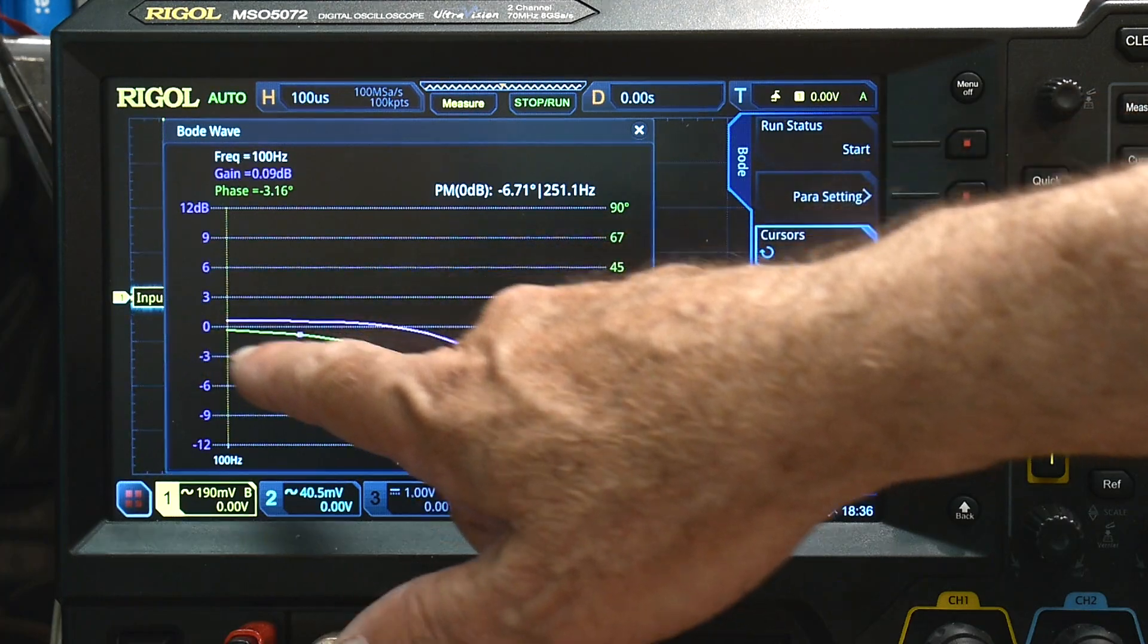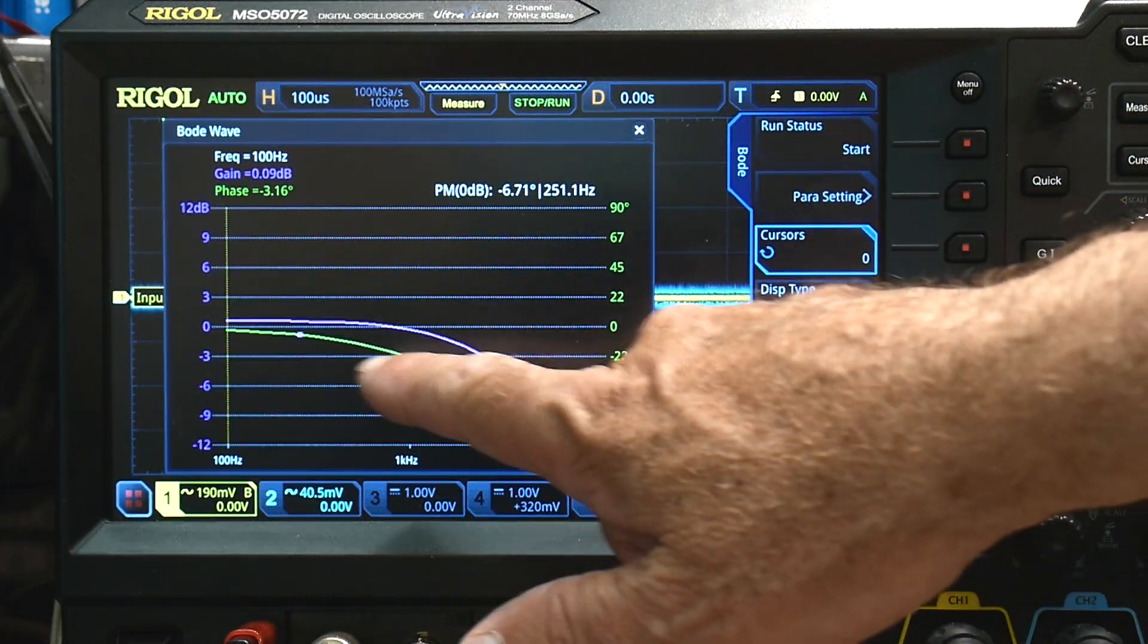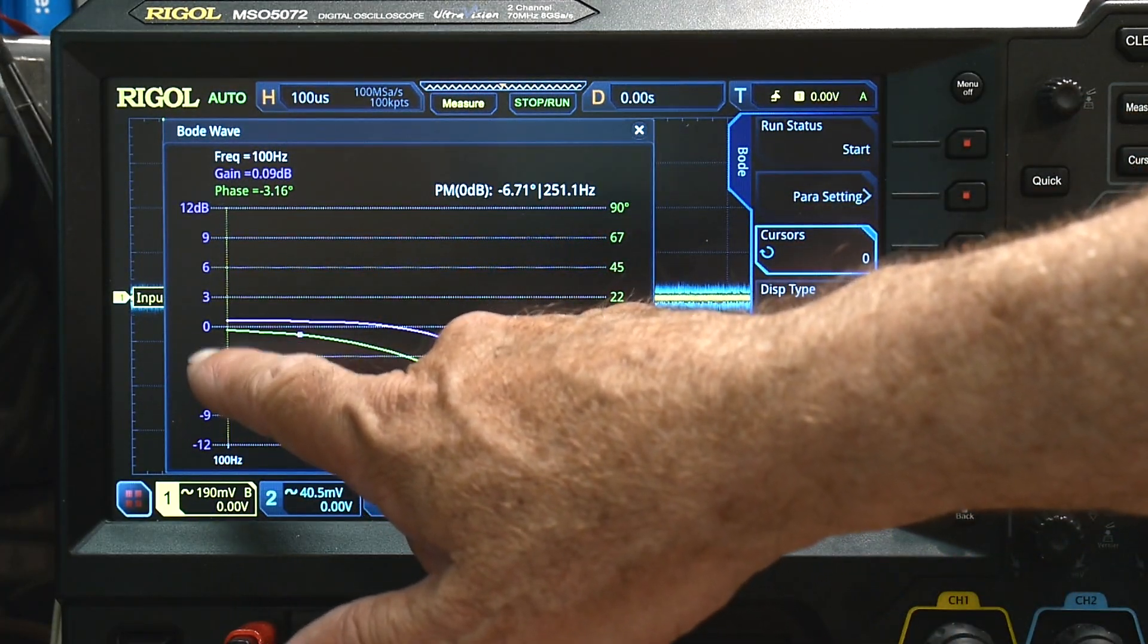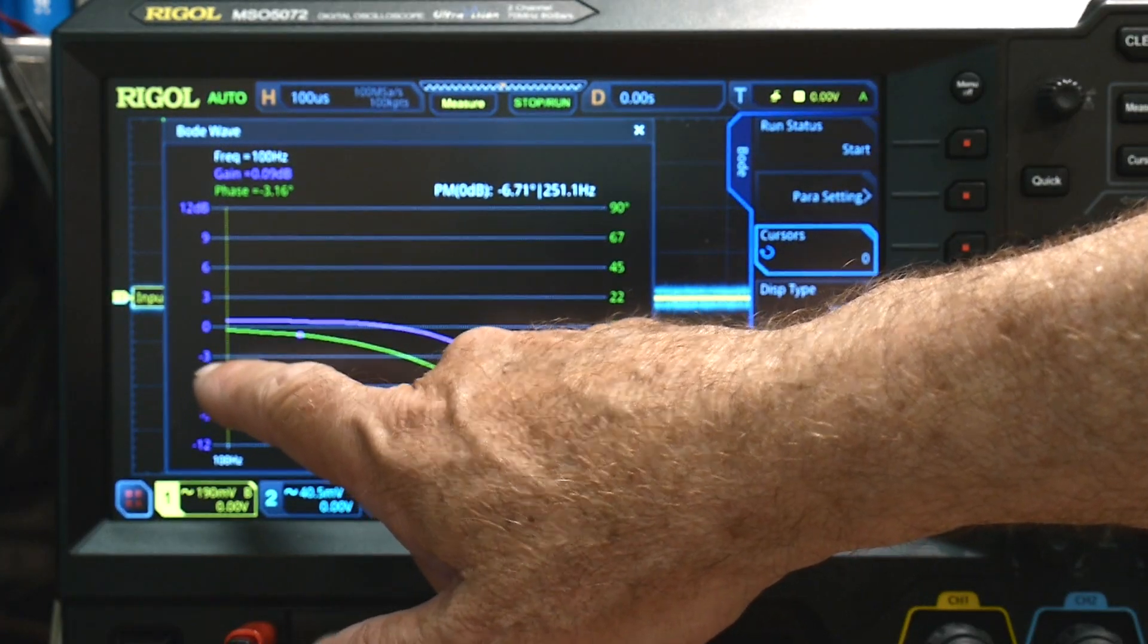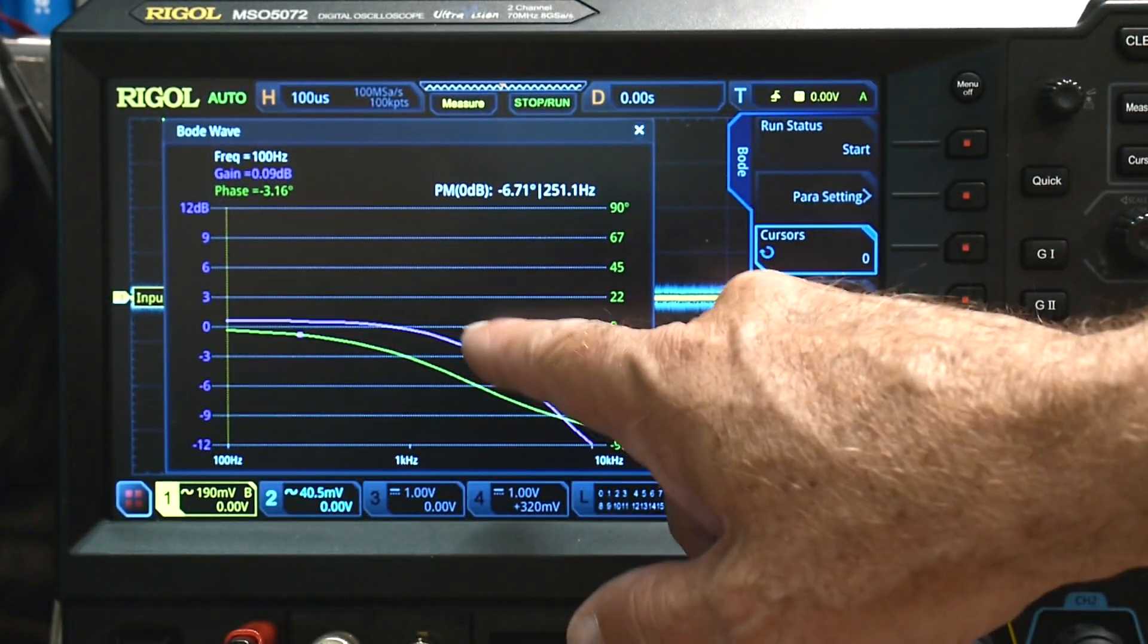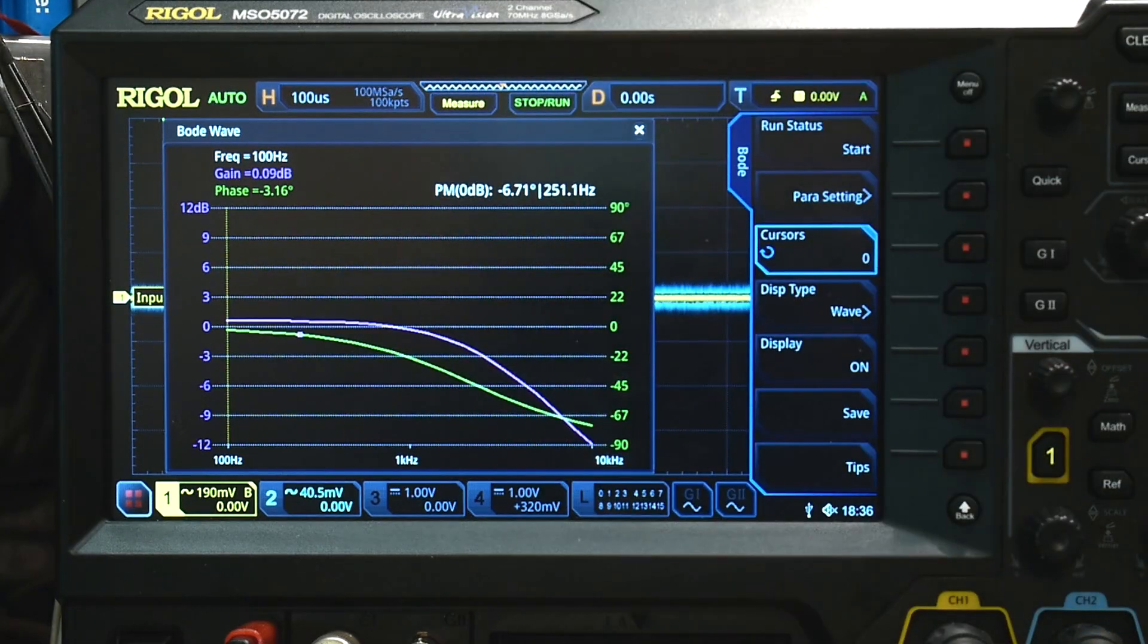And like I said, the purple line is the gain. So a lot of times you'll look for the minus 3 dB point and say that's the point of the filter, the 3 dB point. The 3 dB point is about right there.